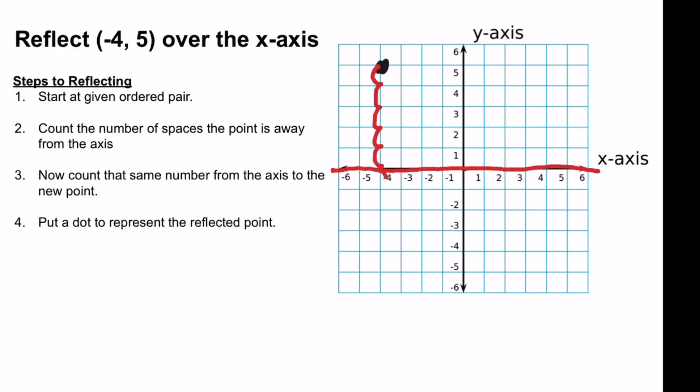So let's count again. 1, 2, 3, 4, 5. So my new point is here. And so that ordered pair for the new point is negative 4, negative 5.